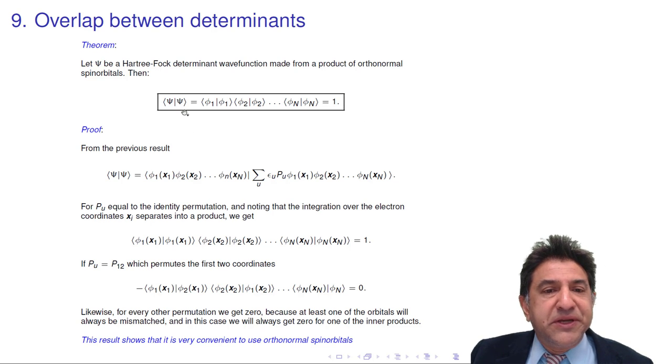Now we have, remember, n factorial terms squared in here. It's remarkable that this thing comes out to be 1. So let's see how that works. We're going to need our previous results. Here's the proof.